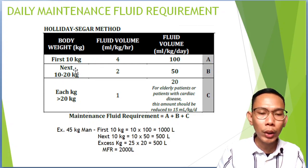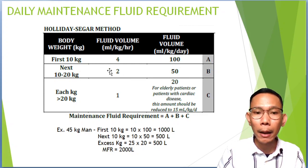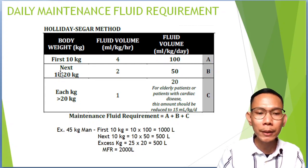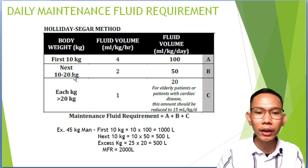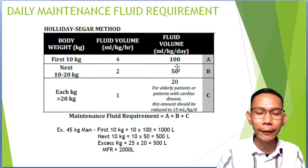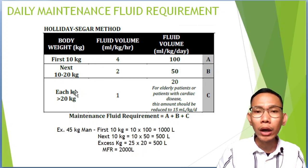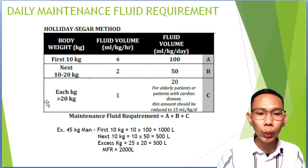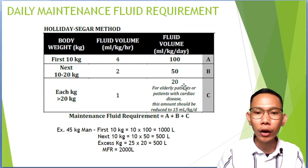For the next 10 to 20 kg — note: this should be 11 to 20 — each kilogram requires 50 ml. Take note of that correction: it should be 11 to 20. If the patient's weight reaches 11 to 20 kg, each kilogram requires around 50 ml. If the patient's weight is more than 20 kg, each additional kilogram requires 20 ml of fluid.